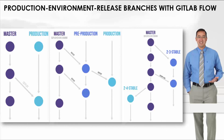GitLab flow addresses this by providing three environments: production on the left, the environment in the middle, and release branches. Starting with production, you'll notice there's a master branch and a production branch. Within the environment area you can have master, pre-production, and production — or several branches like QA, pre-production, post-production, and so on. Everything is deployed from master to staging to pre-production to production, and you can select which parts of the code to deploy and which are not yet stable.